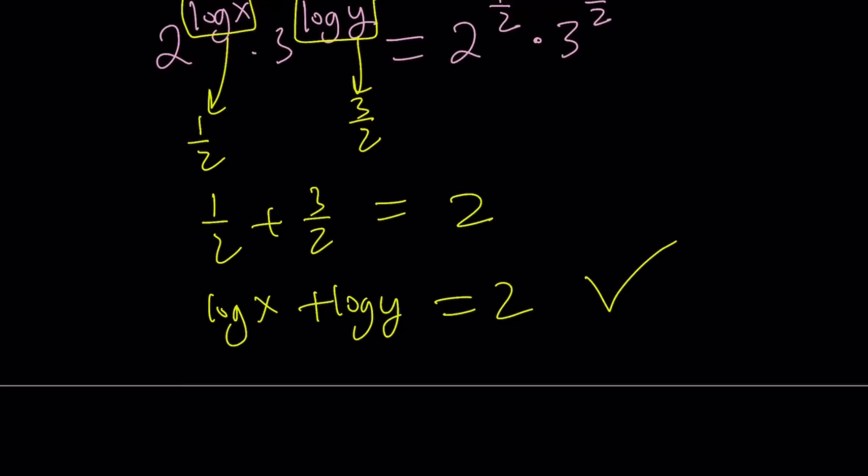So from here, we get the same thing: log x equals 1 half, which means x equals square root of 10 and y equals 10 times the square root of 10.